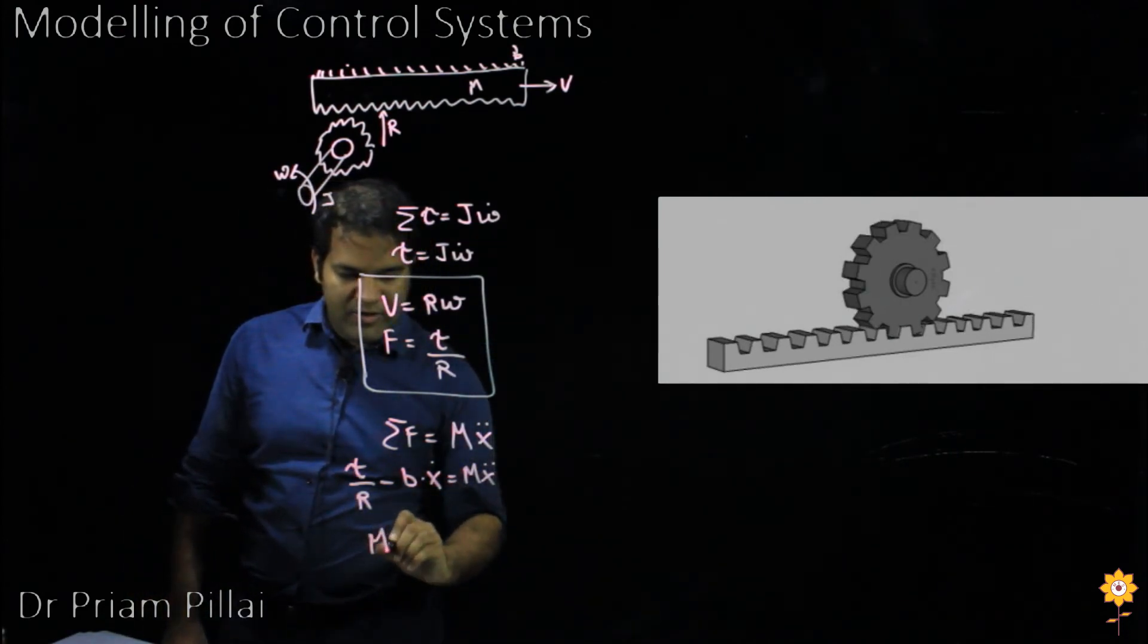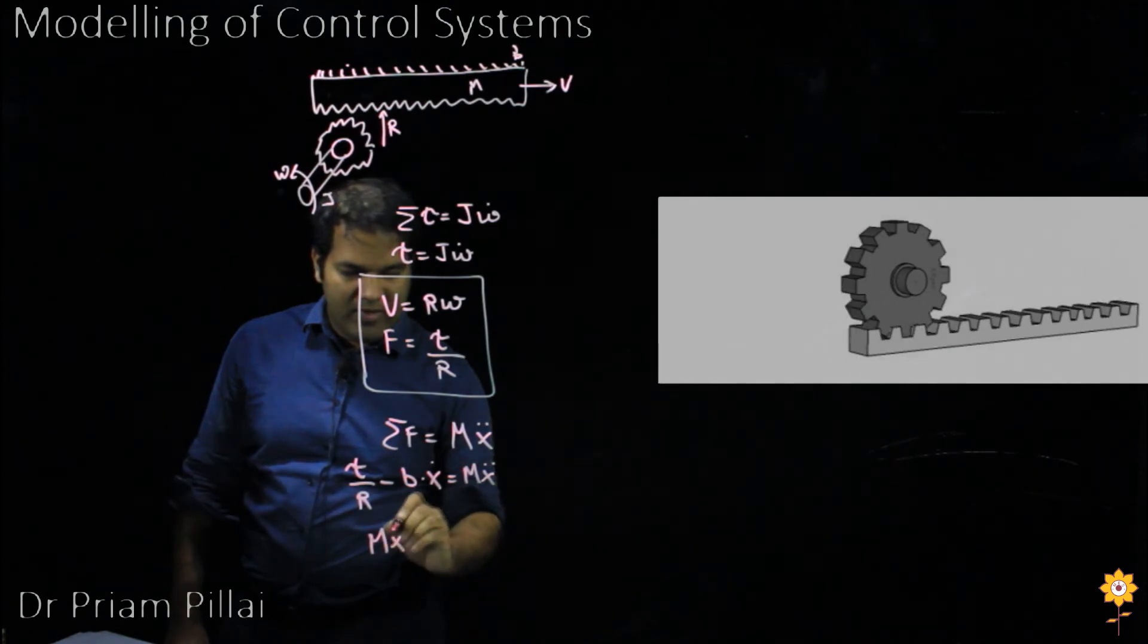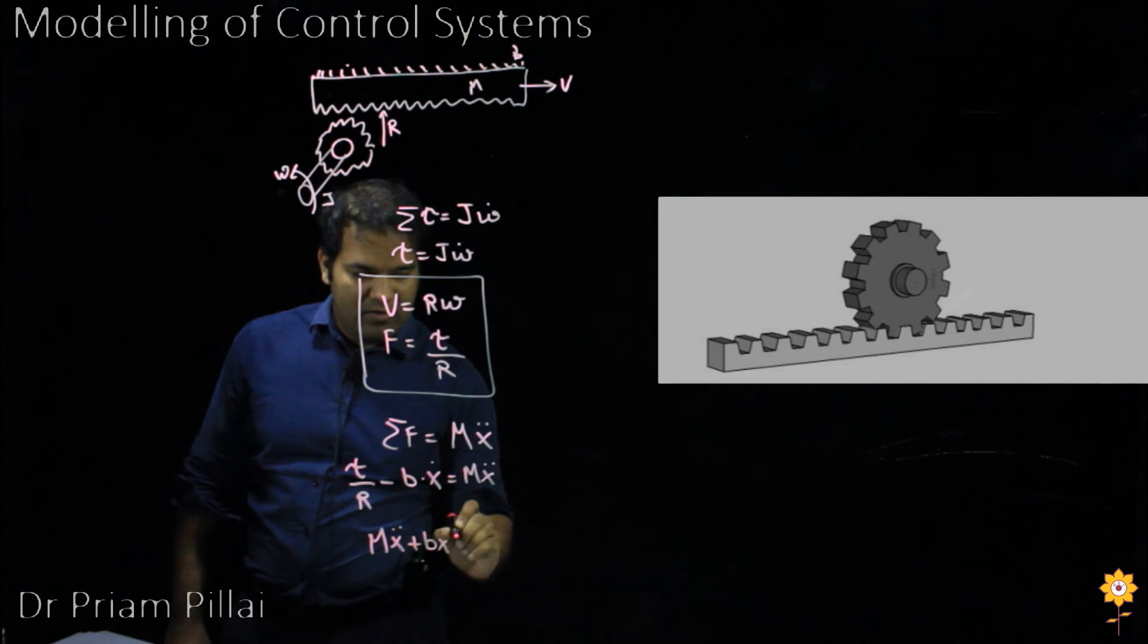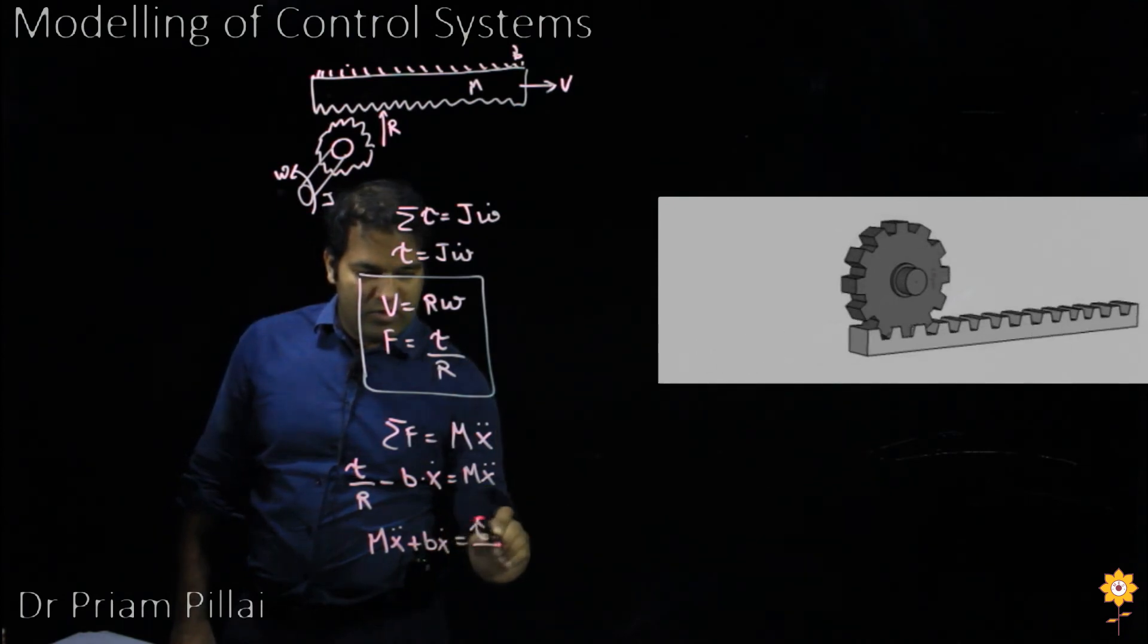So we get another equation that looks like this: M X double dot plus B X dot equals tau over R.